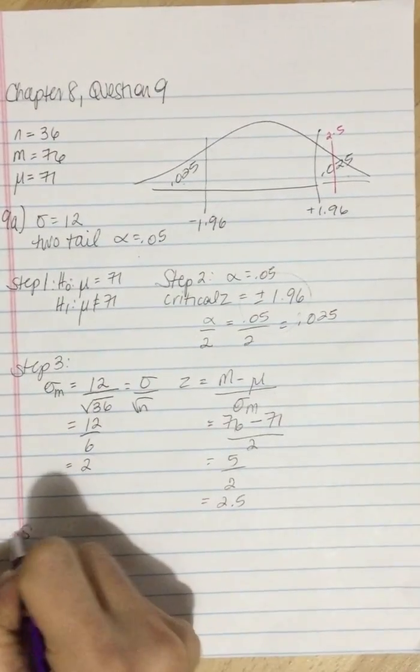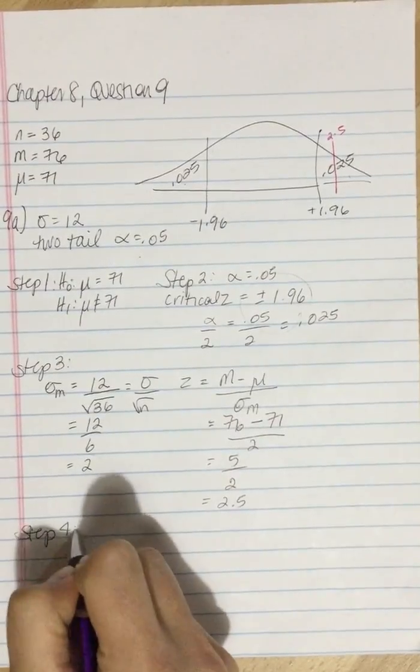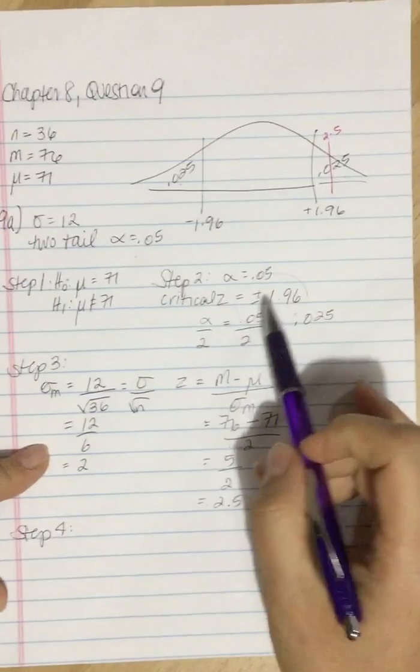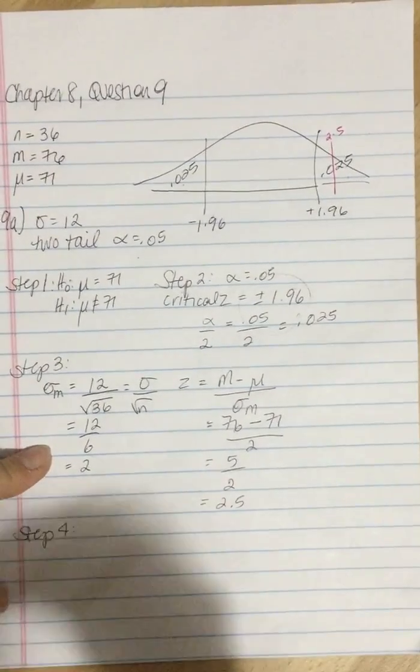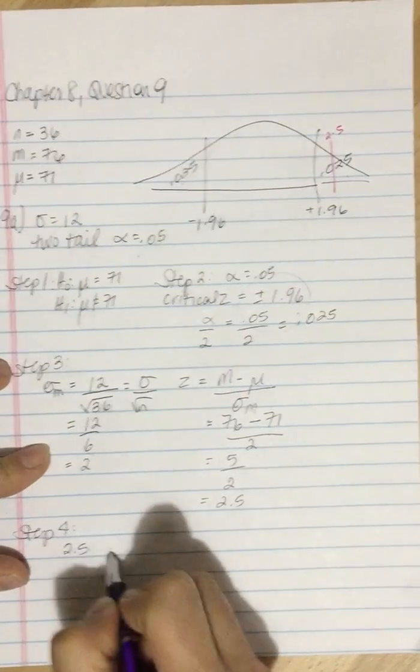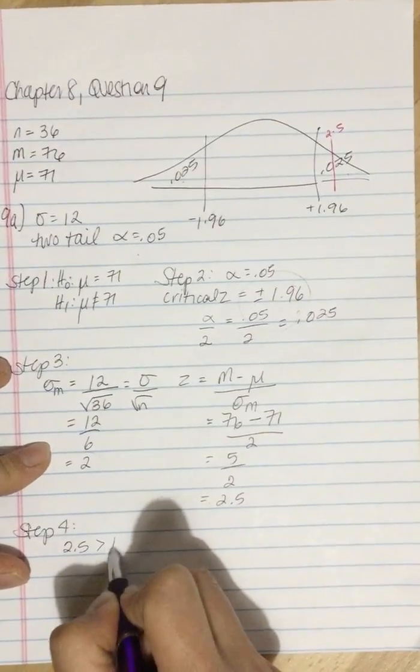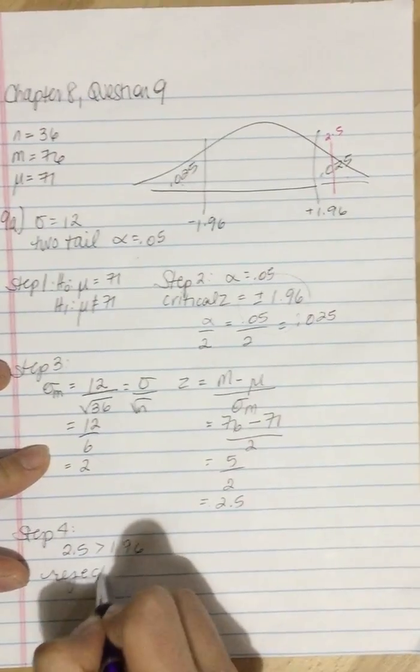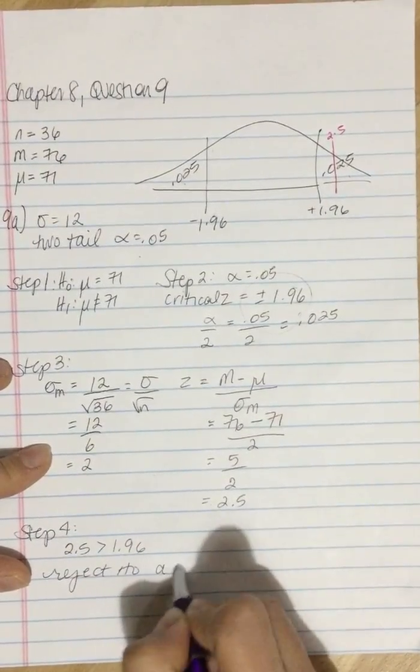So in step four, what I do is I'm going to compare this 2.5 to the critical value that I calculated or found in step two. And 2.5 is more extreme than 1.96. So I reject the null and accept the alternate.